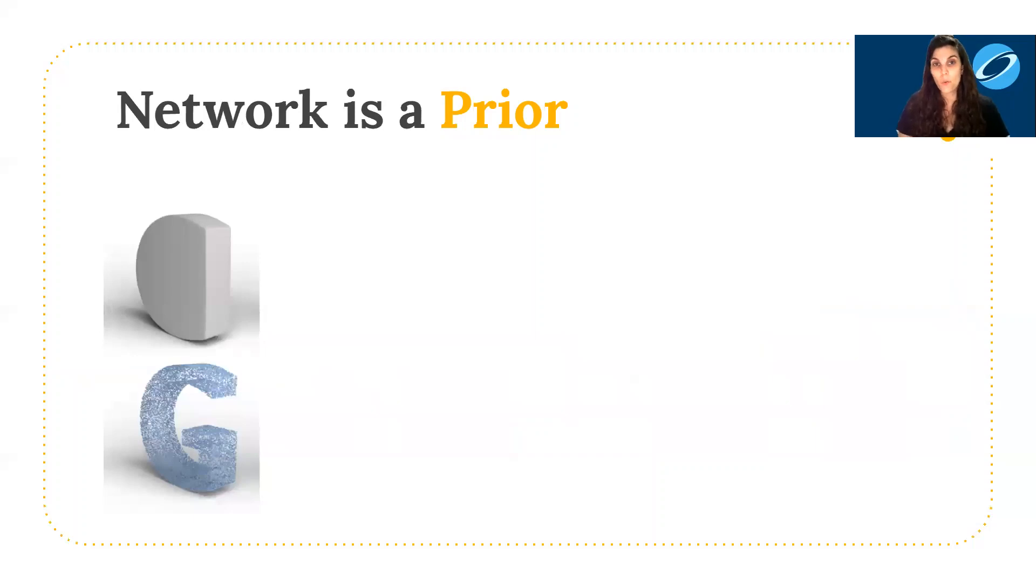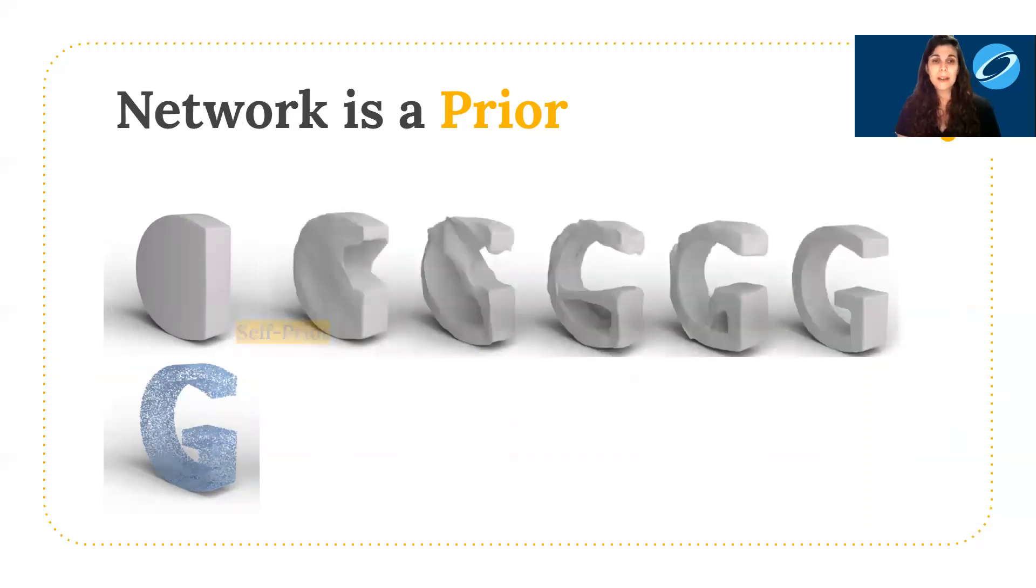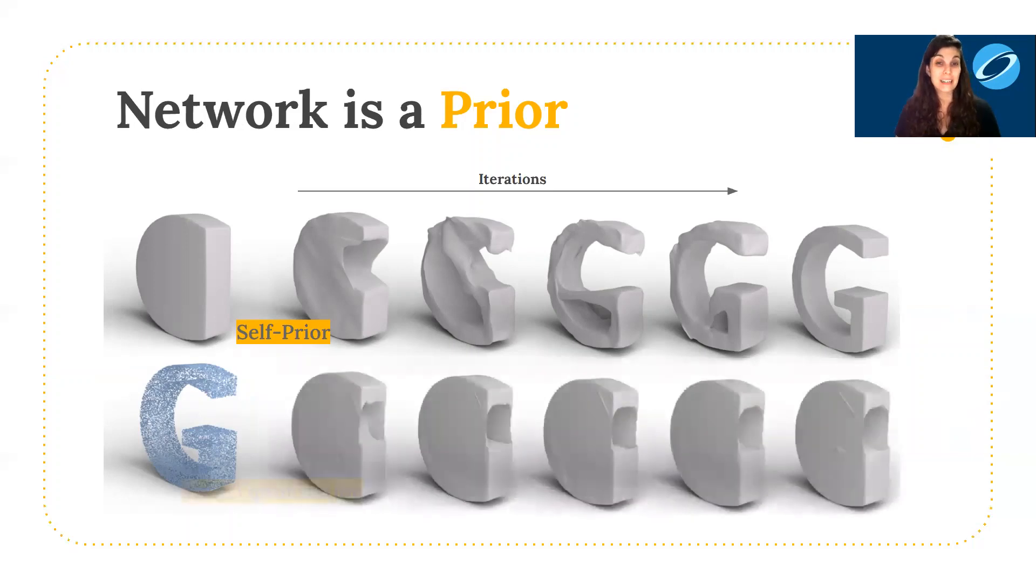Consider the following example with this input point cloud and corresponding initial mesh. When optimizing the CNN weights, the mesh enters this difficult second-order cavity. However, if we optimize the same exact objective but optimize the mesh vertices directly, you can see that it becomes trapped in a local minima. So here we see how minimizing the objective energy term is not enough. We need some type of prior, and we see here that the network behaves like a powerful prior, and encouraging self-similarity helps it avoid poor local minima.